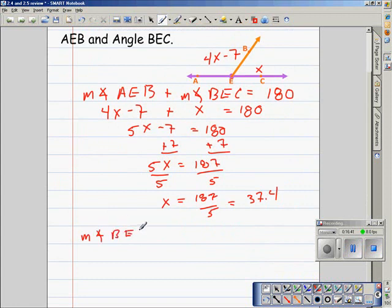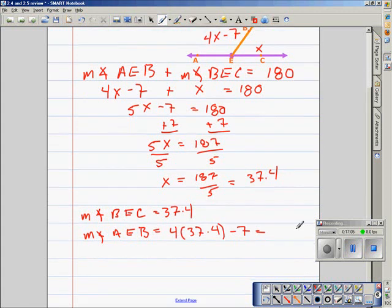To find the measure of angle AEB, we have to substitute 37.4 for X into this expression. If you work that out, that comes out to 142.6.